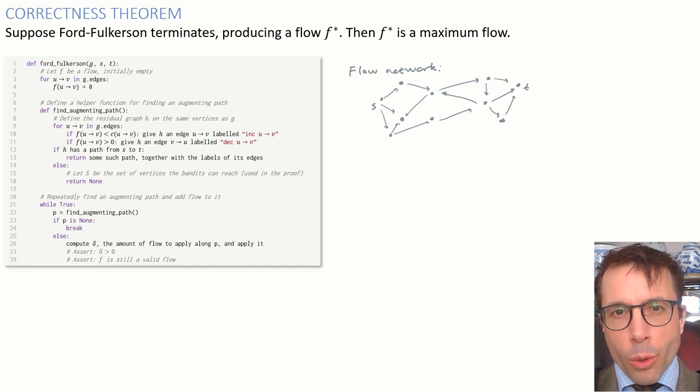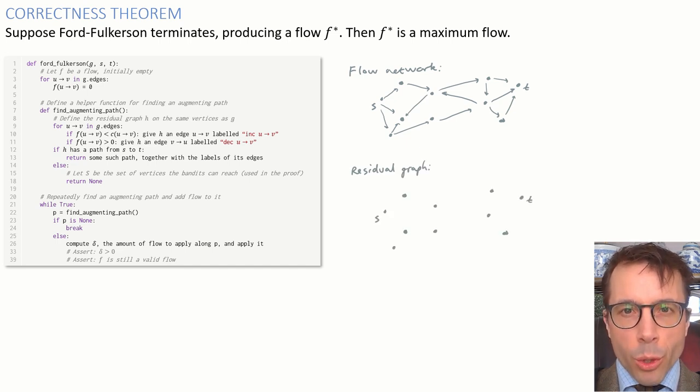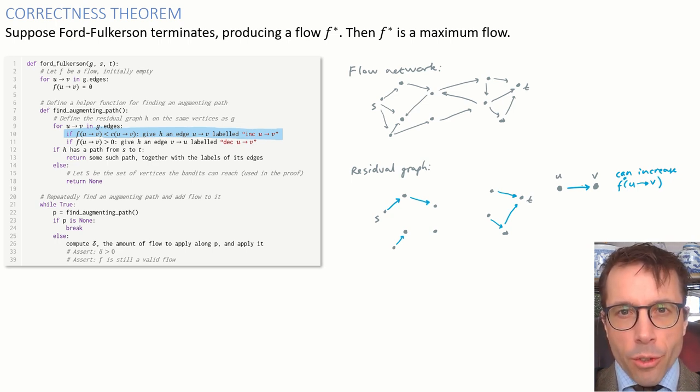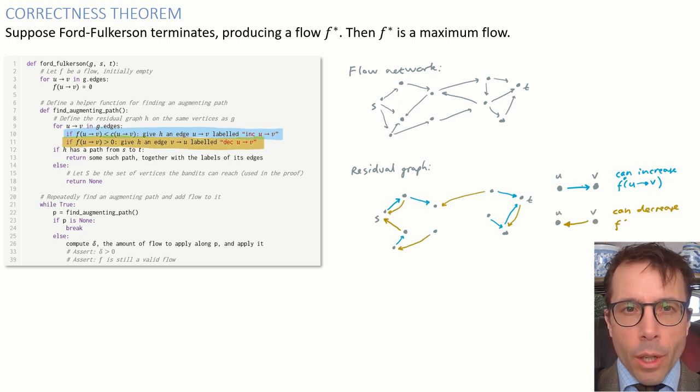There's the flow that we've found, call it f-star. We look at this flow, and we produce a residual graph. The residual graph has exactly the same vertices as our flow network, but it has different edges. The rules for edges go like this. If there's an edge in the flow graph, where the flow is less than capacity, then we draw in an edge in the residual graph saying, increase the flow on this edge. And if there's an edge in our flow graph where the flow is positive, let's say f-star of u to v is above zero, then we draw in a backwards edge from v to u, and give it the label decrease the u to v flow.